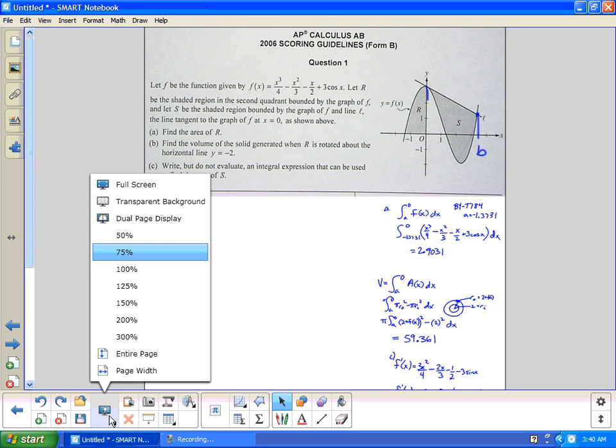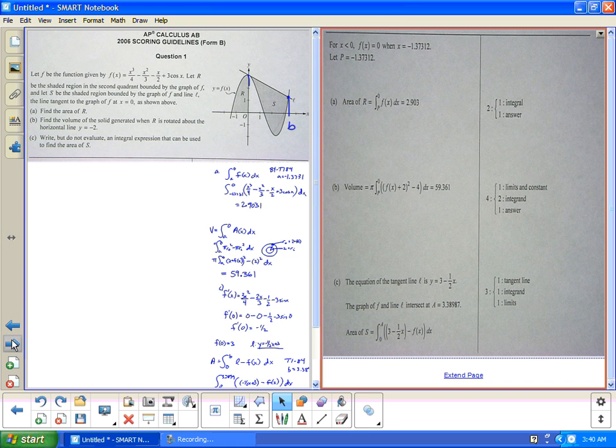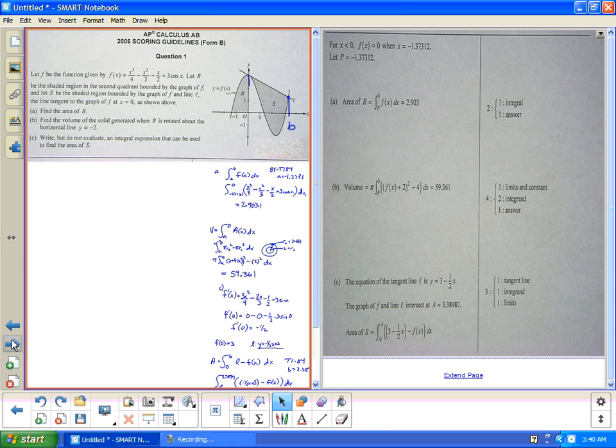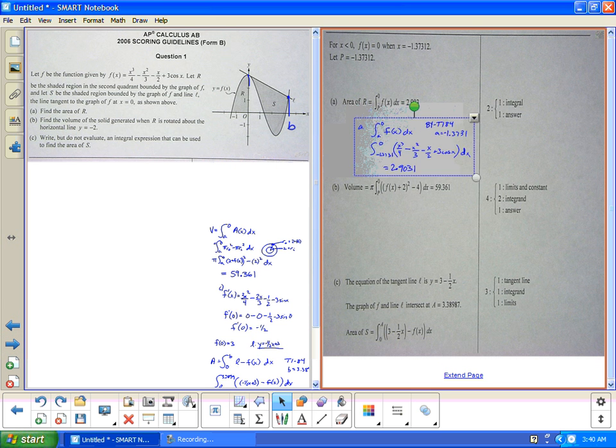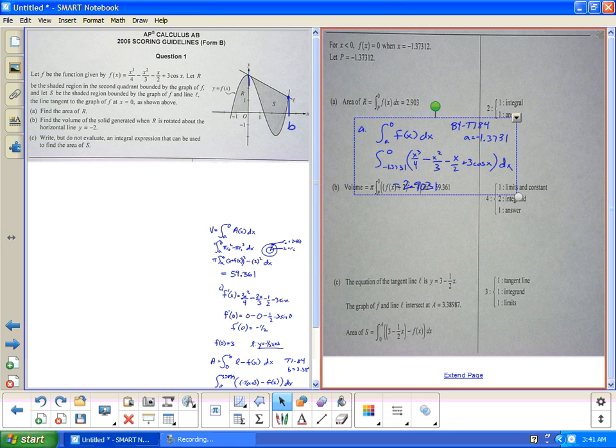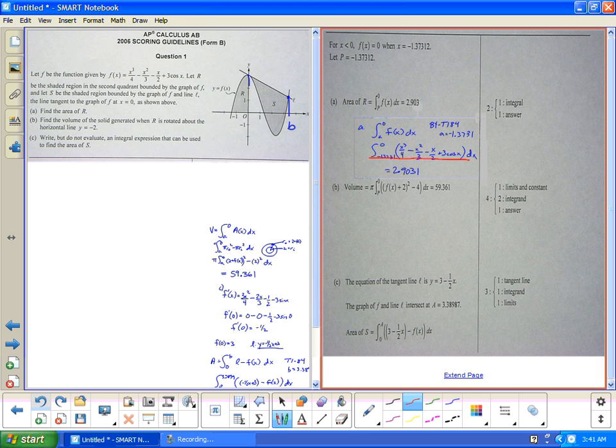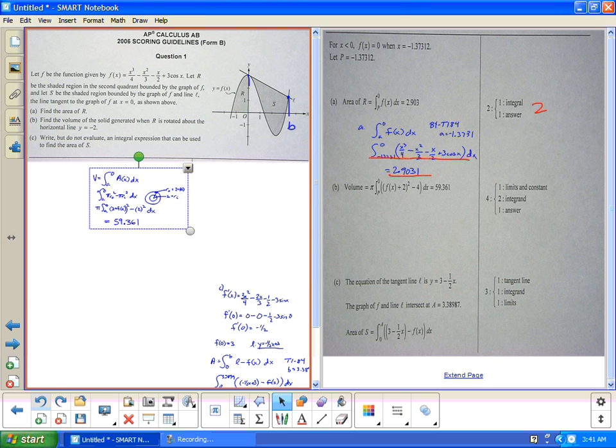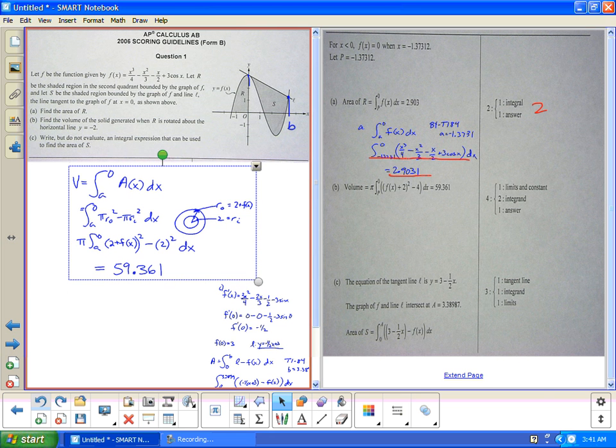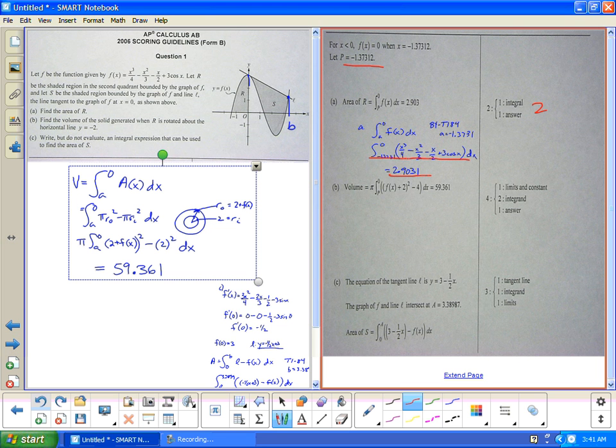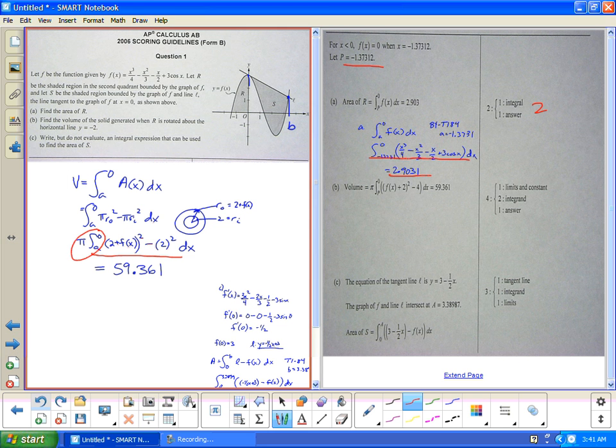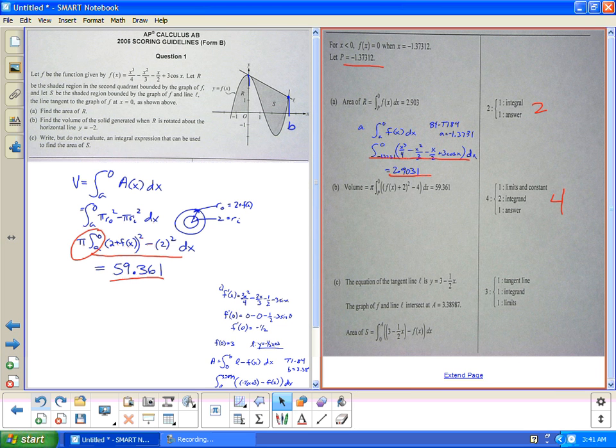Alright, so I'll go to dual page and score this and see how it all went. I have the answers on the next page. Alright, so if I pull over A, I'll take pull A over. The integral is one point, which I have here, and the answer is one point, which I have there. So I get the two points there. On the next one, I'll leave this over on this side, just make it bigger so we can read it. Alright. Limits and constant. I had pi defined as that value, I have a, so same things, and a squared. So there's my limits and constant are right here, that's a point. The integrand is two, the answer is one. So there's four points out of those four.